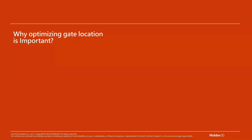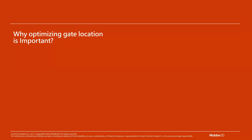We will talk about how to design a gate in injection molding. To understand why we need to design gate locations, we need to cover some basic knowledge. Injection molding revolves around four main topics: materials, machine, mold, and process conditions. Putting all four sections into consideration guides the revision process.